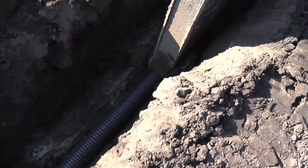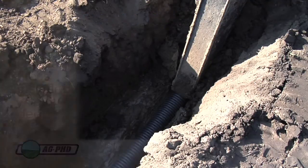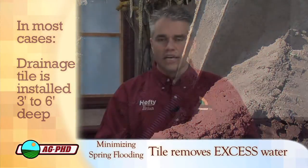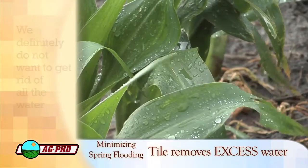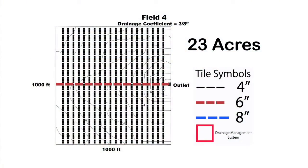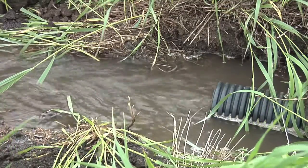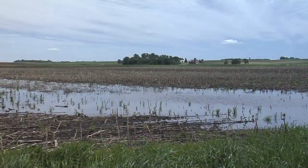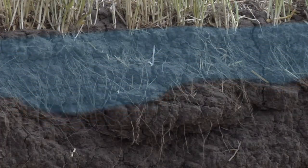When we put drainage tile in the ground, we're putting it usually at a depth of three to six feet deep. The purpose of that drainage tile is to take away excess water in the soil. As farmers, we want to conserve as much moisture as possible out in our fields — we definitely do not want to get rid of all the water. But by putting these tile lines out there, usually one every 50 feet or every 70 feet, and in some cases just a few lines over a whole field, we want to have a few of these lines out there to take care of excess water.